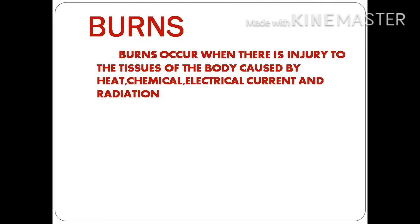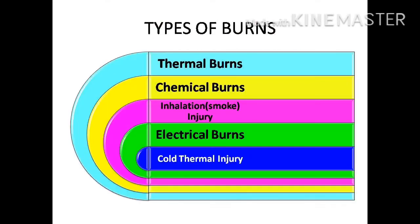Burns occur when there is injury to the tissues of the body caused by heat, chemical, electrical current, and radiation. Based on the sources of burns, they are categorized as: thermal burns, chemical burns, inhalation or smoke injury, electrical burns, and cold thermal injury.